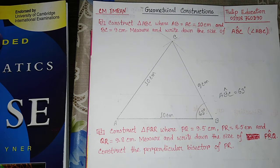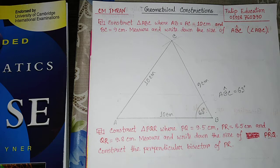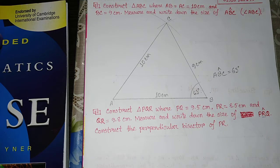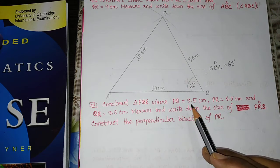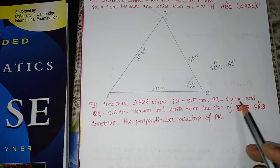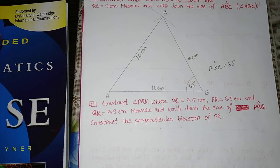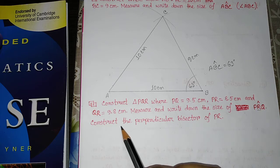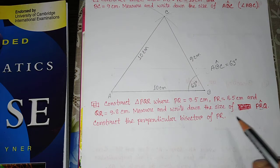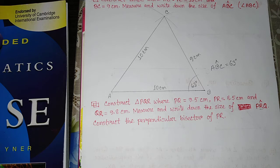We are going to show you how to draw a triangle, and how to find out different angles from this triangle. We are going to construct triangle PQR, where PQ is equal to 9.5 cm, PR is equal to 8.5 cm, and QR is equal to 9.8 cm. Measure and write down the size of angle PRQ. And construct the perpendicular bisector of PR — perpendicular bisector and bisecting a line are quite similar.